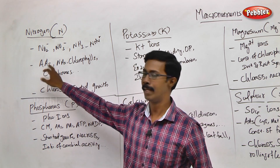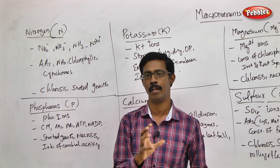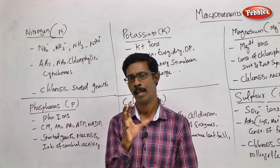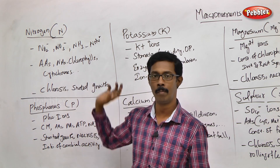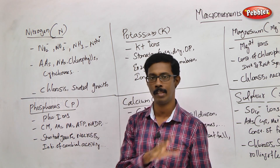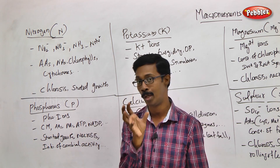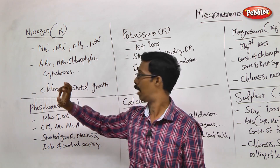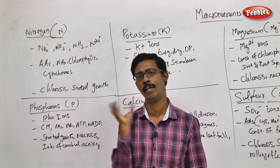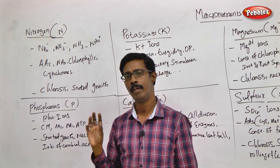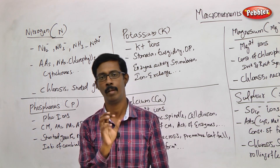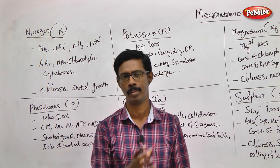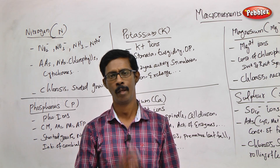Amino acids are nitrogen-containing compounds — they contain an amino group which carries nitrogen. Nucleic acids contain nitrogenous bases: adenine, guanine, thymine, cytosine, and uracil. All of these are nitrogen-containing components that form the structure of nucleic acids.